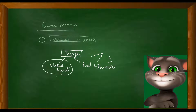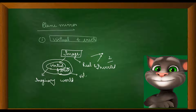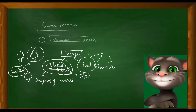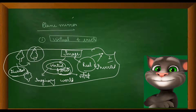A virtual and erect image means that it doesn't exist in the real world — we can't touch it; it exists in an imaginary world. Erect means it appears straight, as it is. For example, the erect image of a tree looks like the tree itself, while the inverted image is flipped upside down. A real image exists in the real world. So these are the two types of images we will look upon.